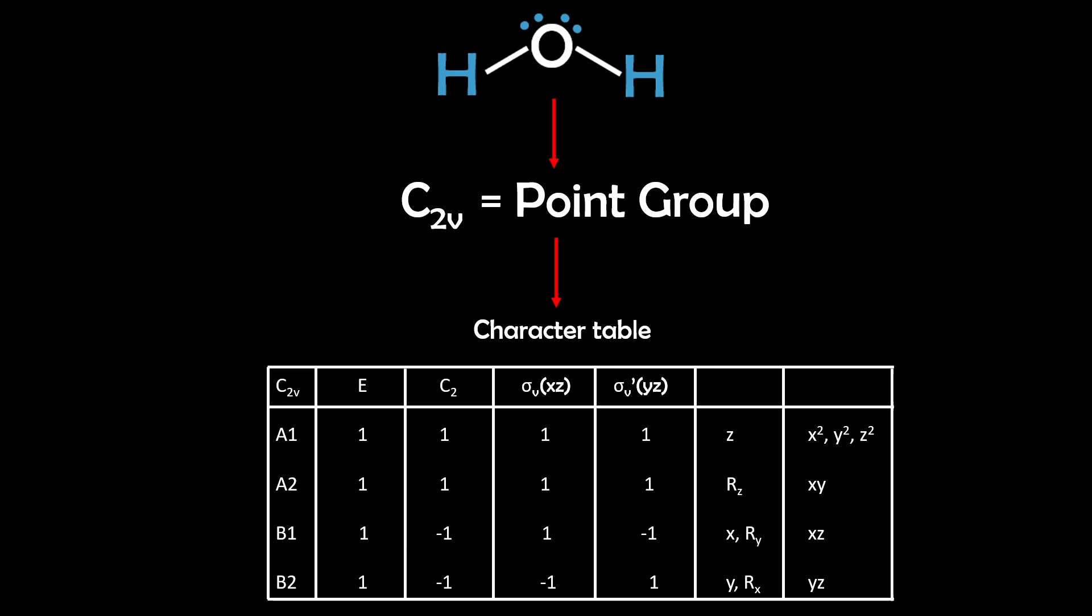So, once we know which symmetry operations a molecule has, we can assign it to a point group, which is a classification that tells us everything about its symmetry. And point groups are the foundation for predicting molecular behavior, but we'll explore this later. Finally, every molecule's order is simply the total number of symmetry operations it has.